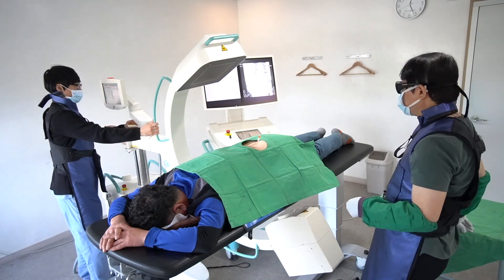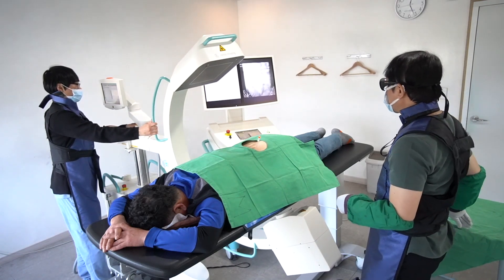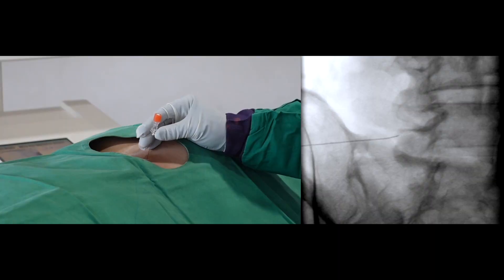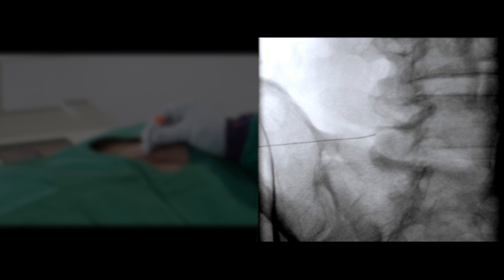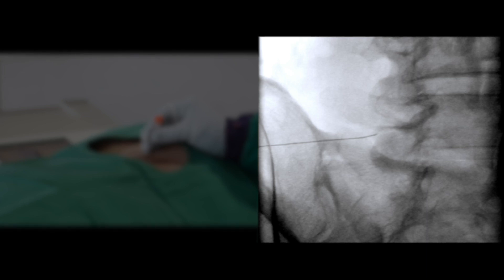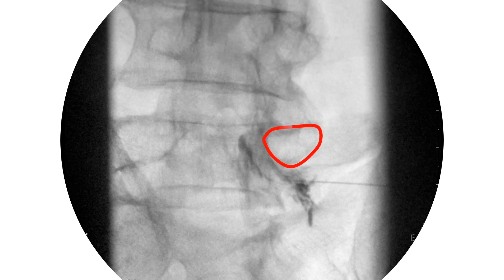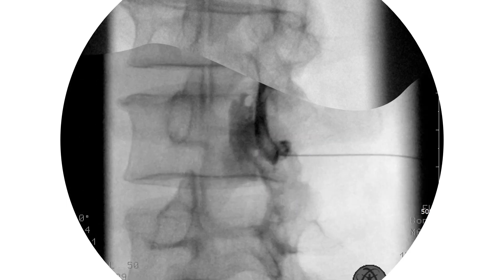I will turn the C-arm to Contralateral Oblique position for double confirmation. I rotate the C-arm as much as possible until I can see the clear profile of the cut section of the pedicle. Please remind the location of the pedicle and pathway of the nerve block in the left Contralateral Oblique image.